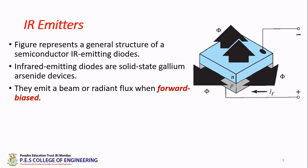The right side structure you're seeing is the structure of an IR Emitter, where you can see there is a p-type material and an n-type material sandwiched together. It is actually a diode made up of solid state gallium arsenide.